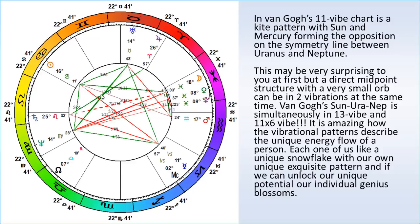It's part of what we call a kite pattern. There's a Mercury-Uranus-Neptune grand trine, with the Sun making sextiles and trines. So that's Van Gogh — he's unstable, he's on fire.